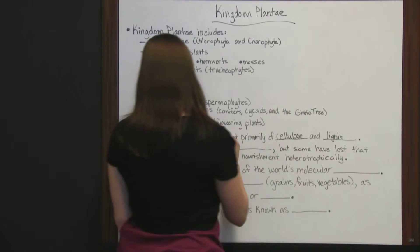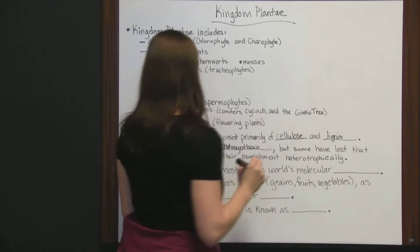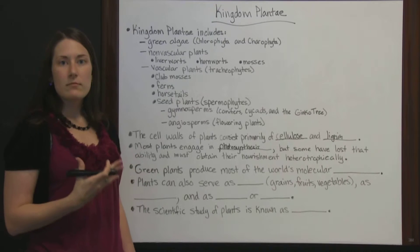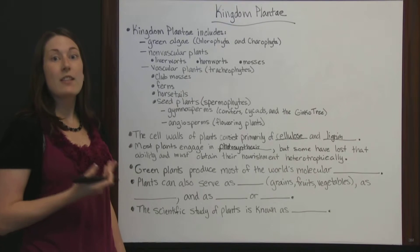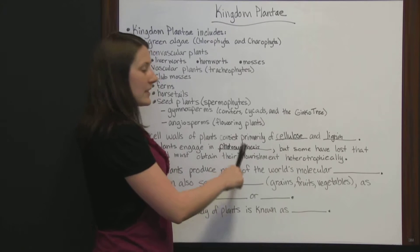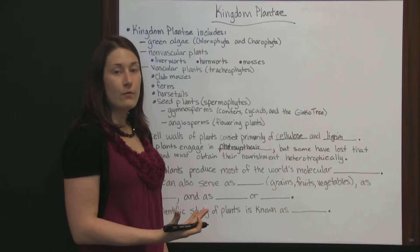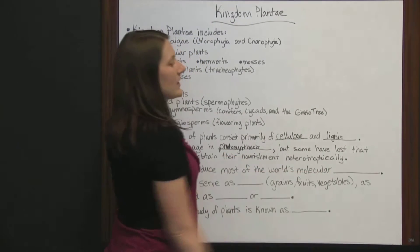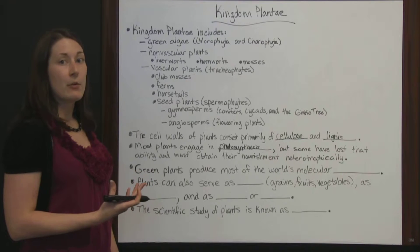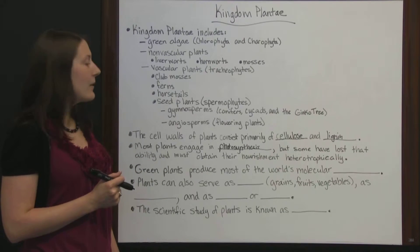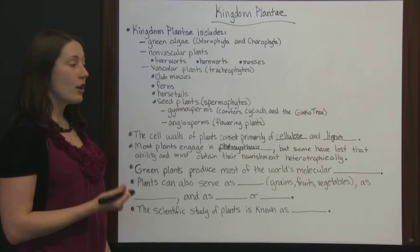Most plants engage in photosynthesis, where plants take in energy from the sun and use it to carry out their own processes. Plants that do this are autotrophs — they can create their own food. Some plants have lost that ability and must obtain their nourishment heterotrophically, meaning they can't make their own food and must get nourishment from other places.